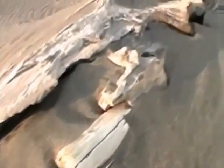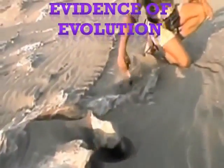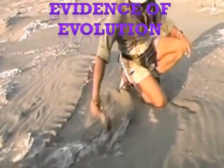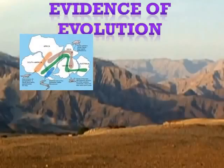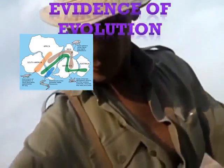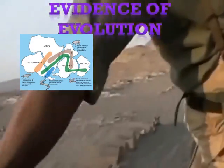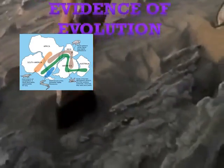Darwin's theory depended on assumptions that involve many scientific fields. Scientists in some fields, including geology, physics, paleontology, chemistry, and embryology, did not have the technology or understanding to test Darwin's assumptions during his lifetime.